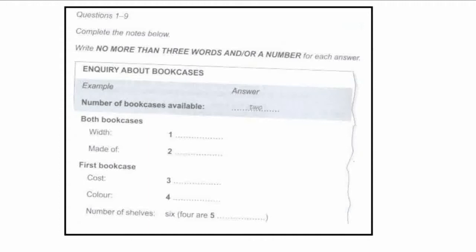You will see that there is an example which has been done for you. On this occasion only, the conversation relating to this will be played first. Hello? Oh, hello. I'm ringing about the advertisement in yesterday's newspaper, the one for the bookcases. Can you tell me if they're still available? We've sold one, but we still have two available. The number of bookcases available is two. So two has been written in the space.